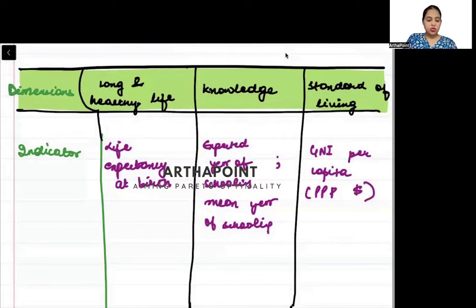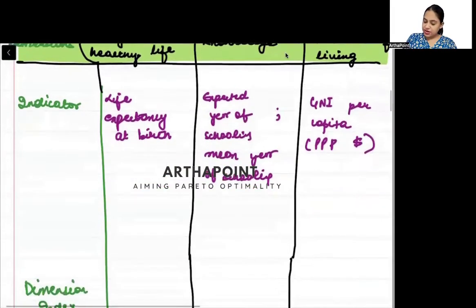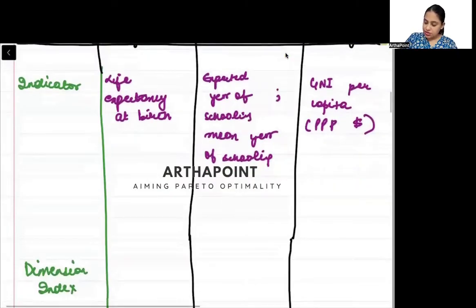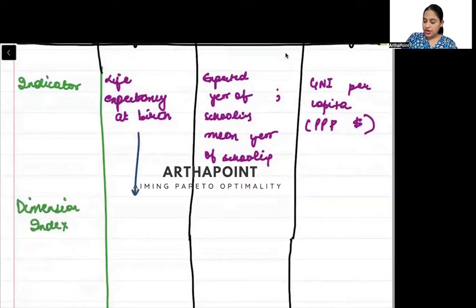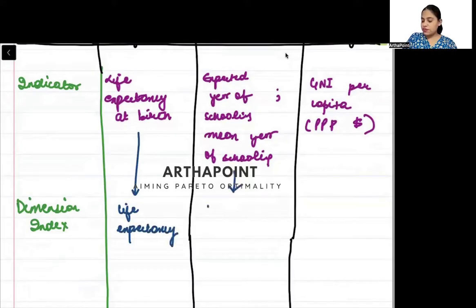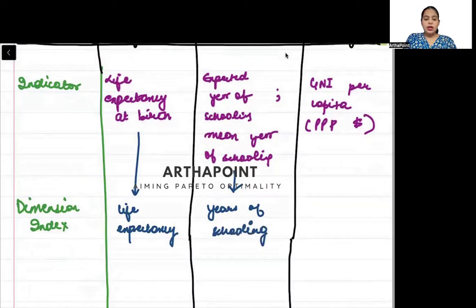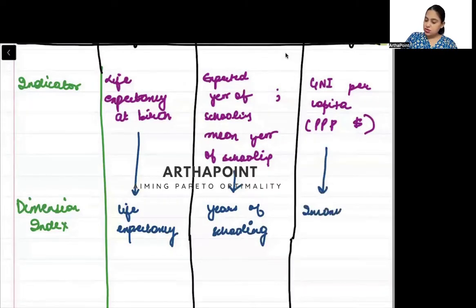From life expectancy at birth, the dimension index you get is called the life expectancy index. From the schooling indicators, the dimension index you get is called the years of schooling index. And from GNI per capita, the dimension index you get is called the income or consumption index.